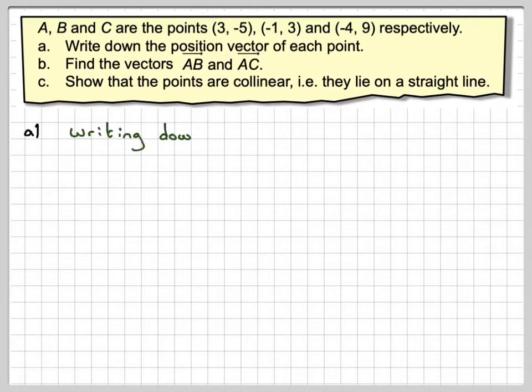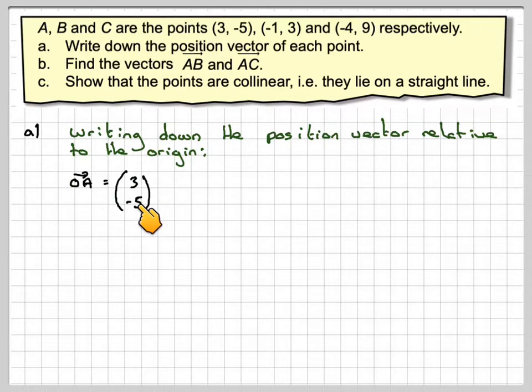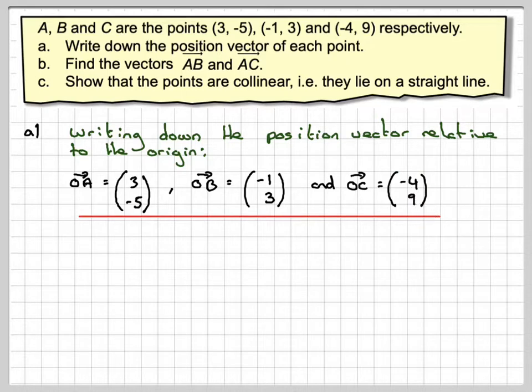If we're writing down the position vector relative to the origin, then OA will be (3, -5), that's point A. For point B, it will be OB which is (-1, 3). And OC is (-4, 9). Or you can write them as 3i - 5j if you want to use that notation.